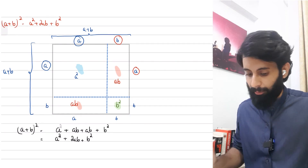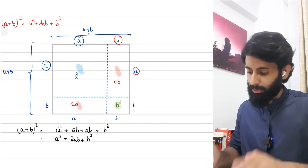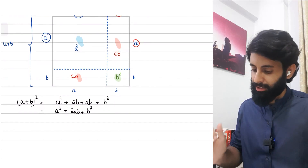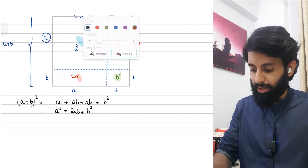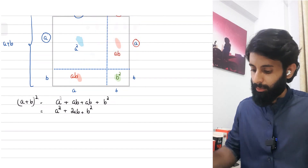This is one way of looking at this identity, and hopefully it makes a lot more sense now that (a + b)² is not a² + b², but is in fact a² + 2ab + b². This was just an introduction.